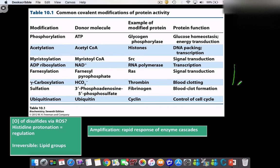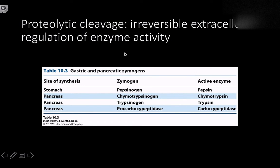If we graph a signal transduction pathway with time on one axis and signal on the other, it starts off really weak and then very quickly grows super fast. One becomes ten, ten becomes a hundred, a hundred becomes a thousand — that's amplification: a very rapid and very loud signal being sent throughout the cell. For intracellular enzymatic activity we have a lot of advantages — we can put phosphate molecules on, we can take them off, we have compartmentalization and relative consistency within the cell.